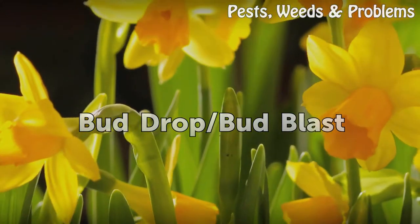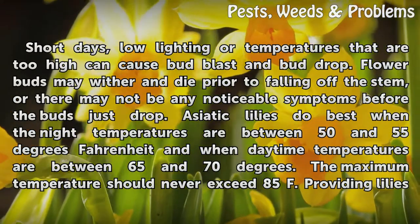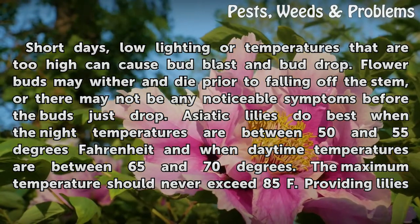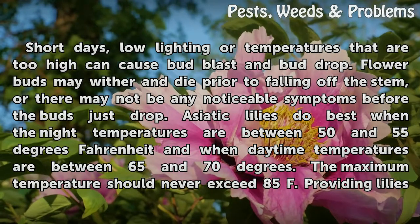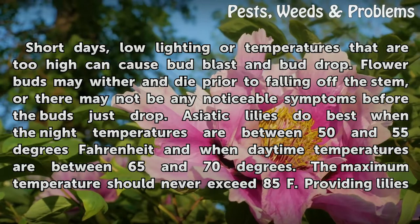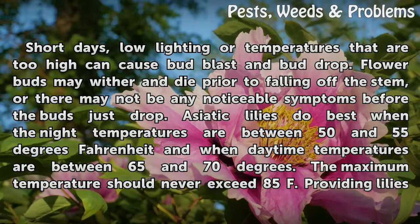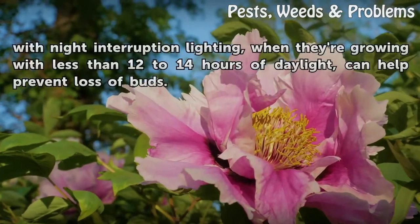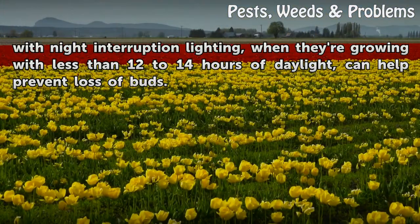Bud Drop and Bud Blast can be caused by short days, low lighting, or temperatures that are too high. Flower buds may wither and die prior to falling off the stem, or there may not be any noticeable symptoms before the buds just drop. Asiatic lilies do best when the night temperatures are between 50 and 55 degrees Fahrenheit and when daytime temperatures are between 65 and 70 degrees. The maximum temperature should never exceed 85°F. Providing lilies with night interruption lighting, when they're growing with less than 12 to 14 hours of daylight, can help prevent loss of buds.